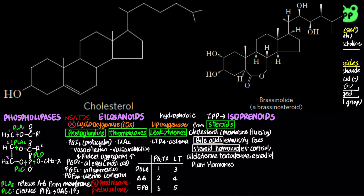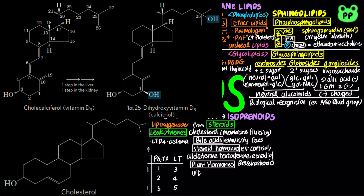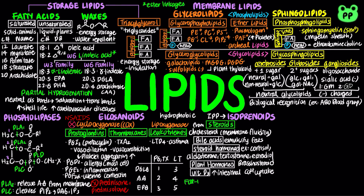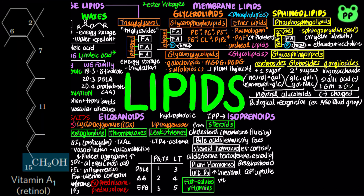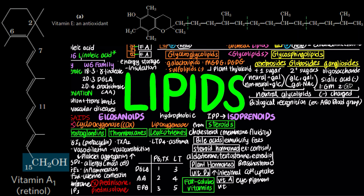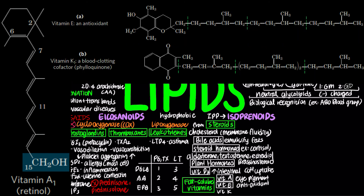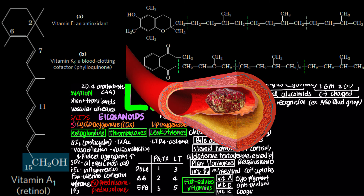The plant growth hormone brassinosteroid is also derived from cholesterol, as well as vitamin D3, also known as cholecalciferol, which is converted to the active form calcitriol in the liver and kidney and functions in regulating calcium uptake in the intestine. Other fat-soluble vitamins are also derived from active isoprene. Vitamin A (retinol) functions as a visual pigment of the vertebrate eye. Vitamin E (tocopherols) functions as an antioxidant. Vitamin K functions in coagulation by activating prothrombin, which converts soluble fibrinogen to insoluble fibrin that forms blood clots.